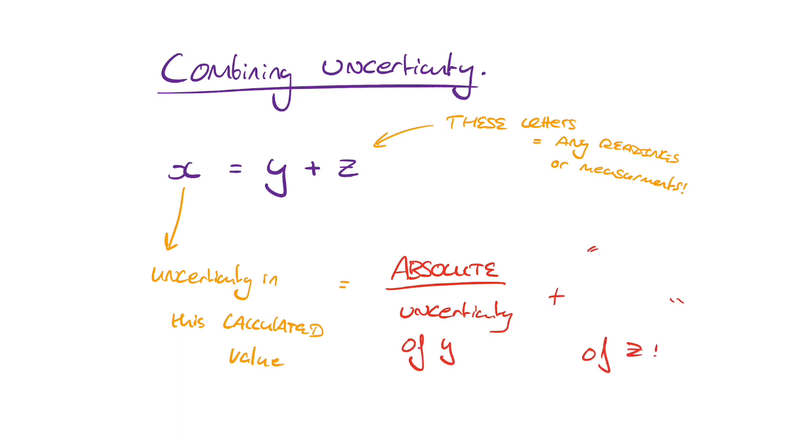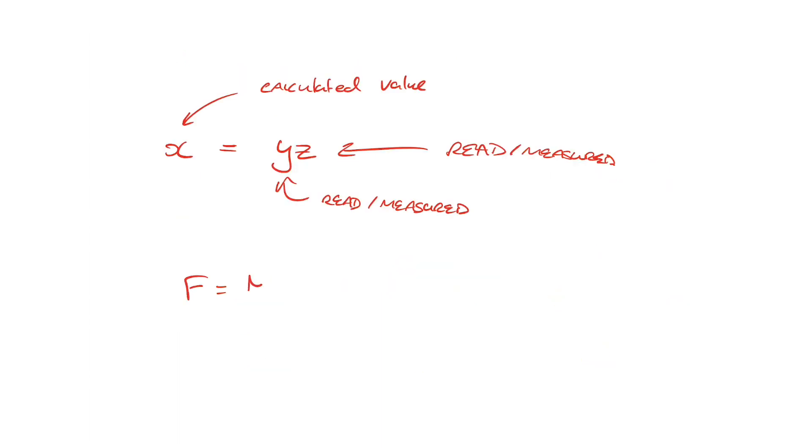We're more interested in percentage uncertainty. So say you had an equation x equals yz. This could be an actual physics equation like f equals ma or something of the sort. For this example, x equals yz. The percentage uncertainty in x is the same as the percentage uncertainty in y add the percentage uncertainty in z.